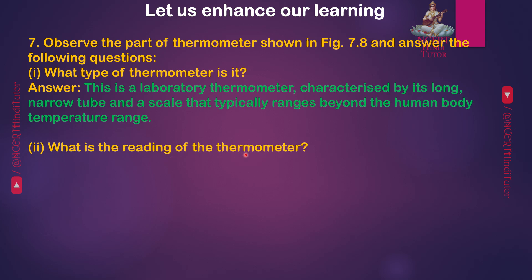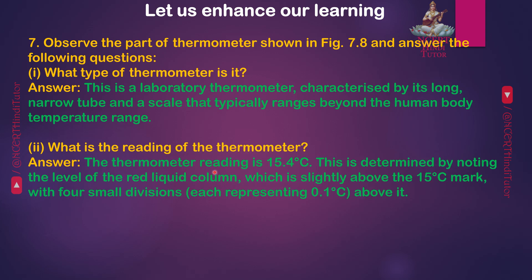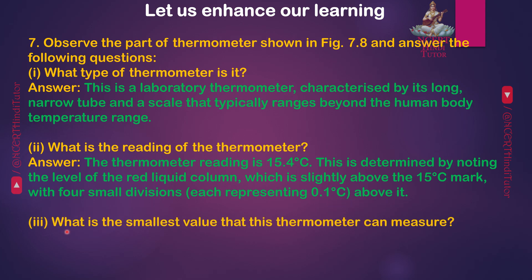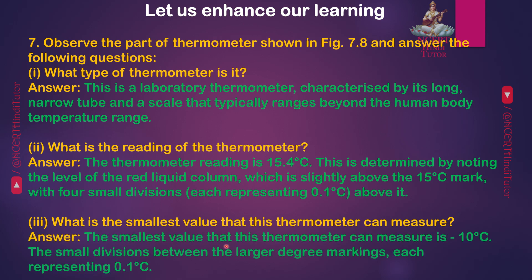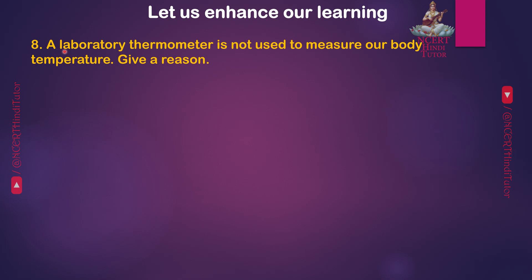Second, what is the reading of the thermometer? Answer: The thermometer reading is 15.4 degrees Celsius, determined by noting the level of the red liquid column, which is slightly above the 15 degrees Celsius mark with four small divisions each representing 0.1 degrees Celsius above it. Third, what is the smallest value that this thermometer can measure? Answer: The smallest value is minus 10 degrees Celsius, with small divisions between larger degree markings each representing 0.1 degrees Celsius.